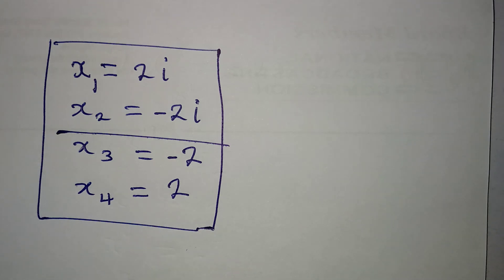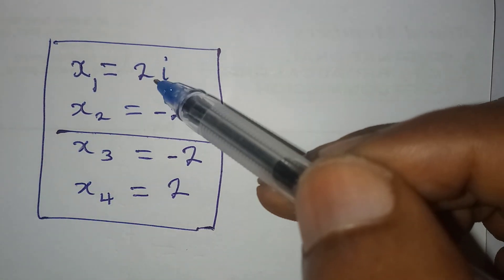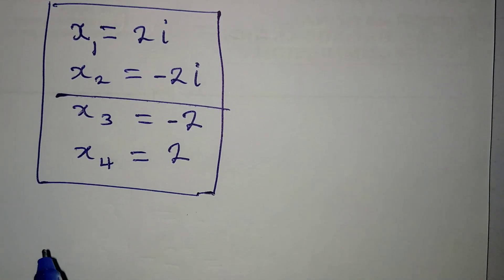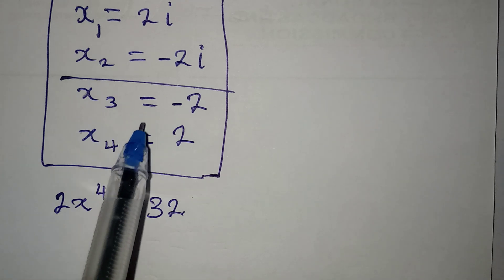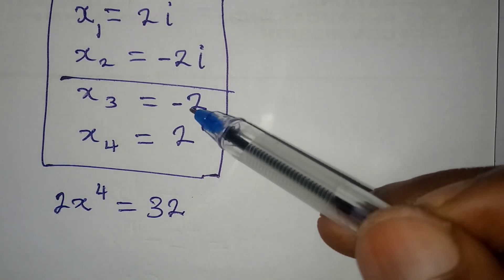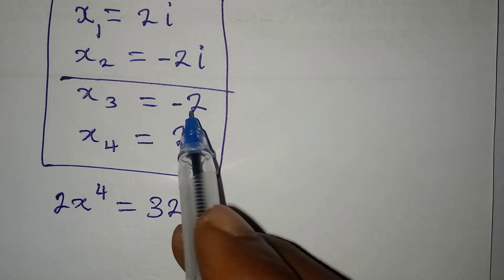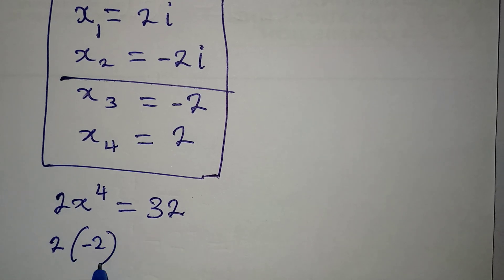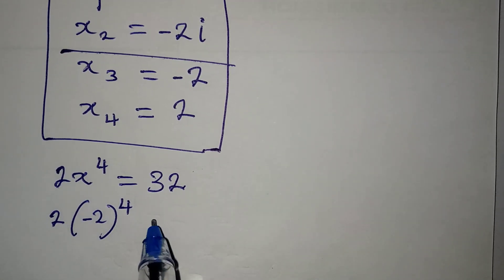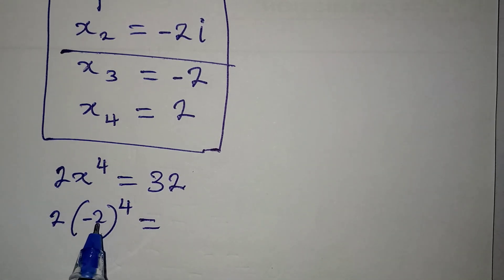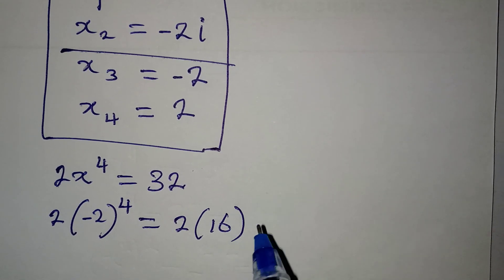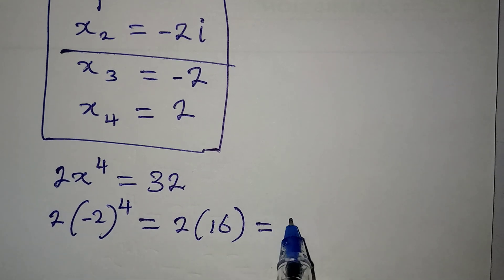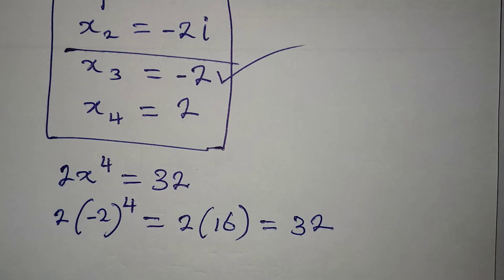These two here are the two real solutions, while the first two are complex. Look at the original equation, 2x to the power of 4 equal to 32. If we put in minus 2, then we have 2 into a bracket, minus 2 to the power of 4. That is minus 2 times minus 2 times minus 2 times minus 2 — that is four places — which gives us positive 16. So we have 2 times 16, and at the end of the day we have 32, meaning that this satisfies the equation.